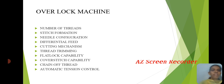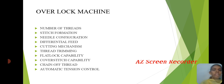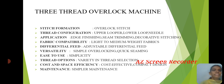Overlock Machine features include: Number of Threads, Stitching Formations, Needle Constructions, Differential Feed, Cutting Mechanism, Trimming Threads, Flat Lock Capability, Convertible Capability, Chain of Threads, and Automatic Tension Control.